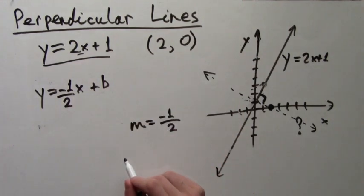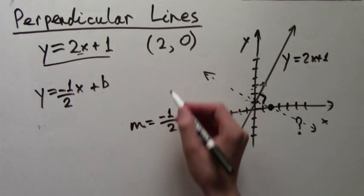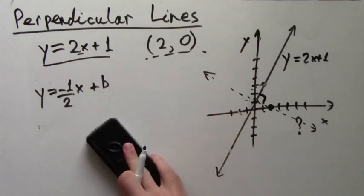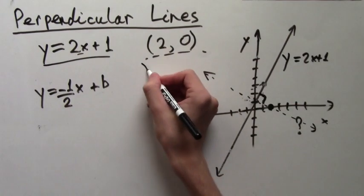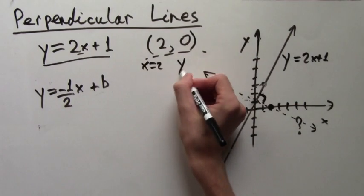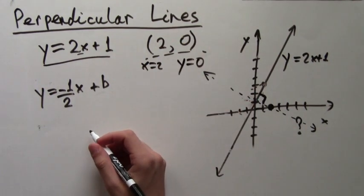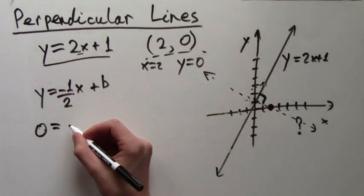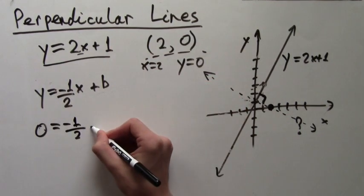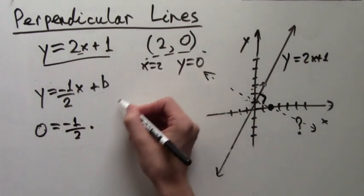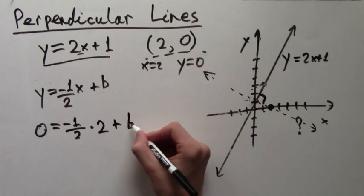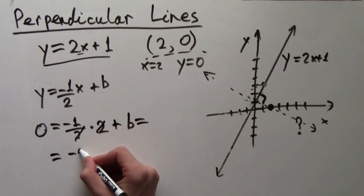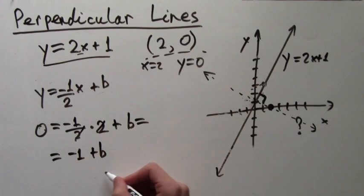So how do we find b? It's the last thing we need to know. Well, we can use the point that is given that the line must go through. This point tells us that x equals 2 and y equals 0 should give a truthful equality when plugged into the formula. So we plug in, y equals 0 equals negative 1 half times x equals 2 plus b. This simplifies to 0 equals negative 1 plus b. So of course b must equal positive 1.